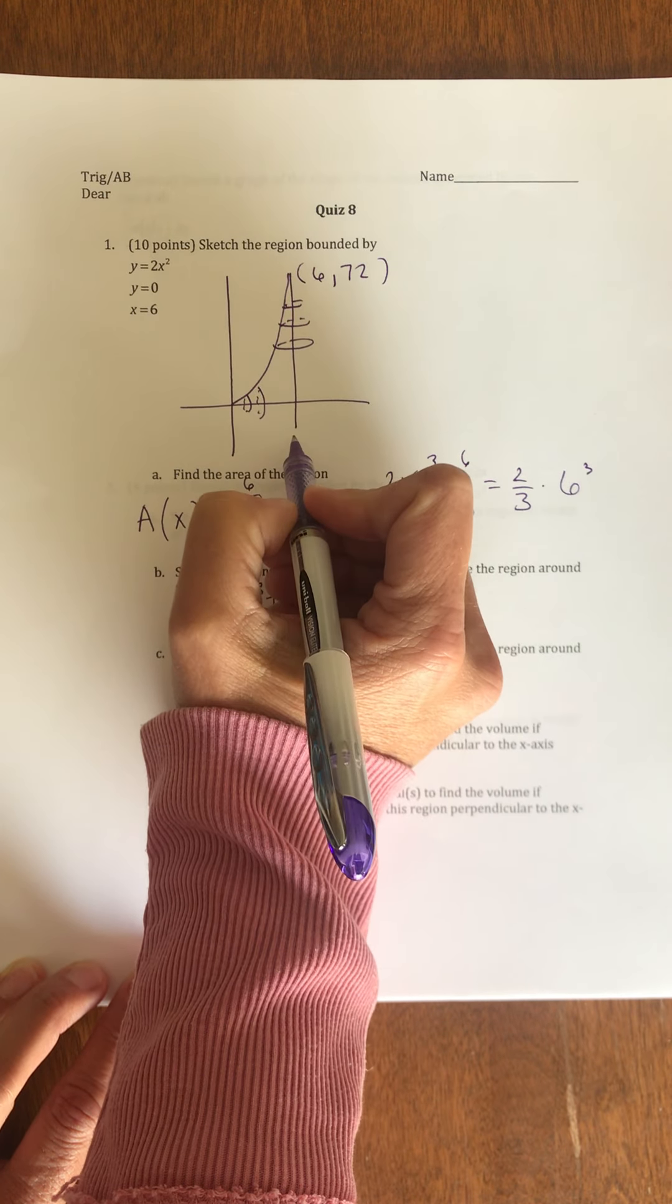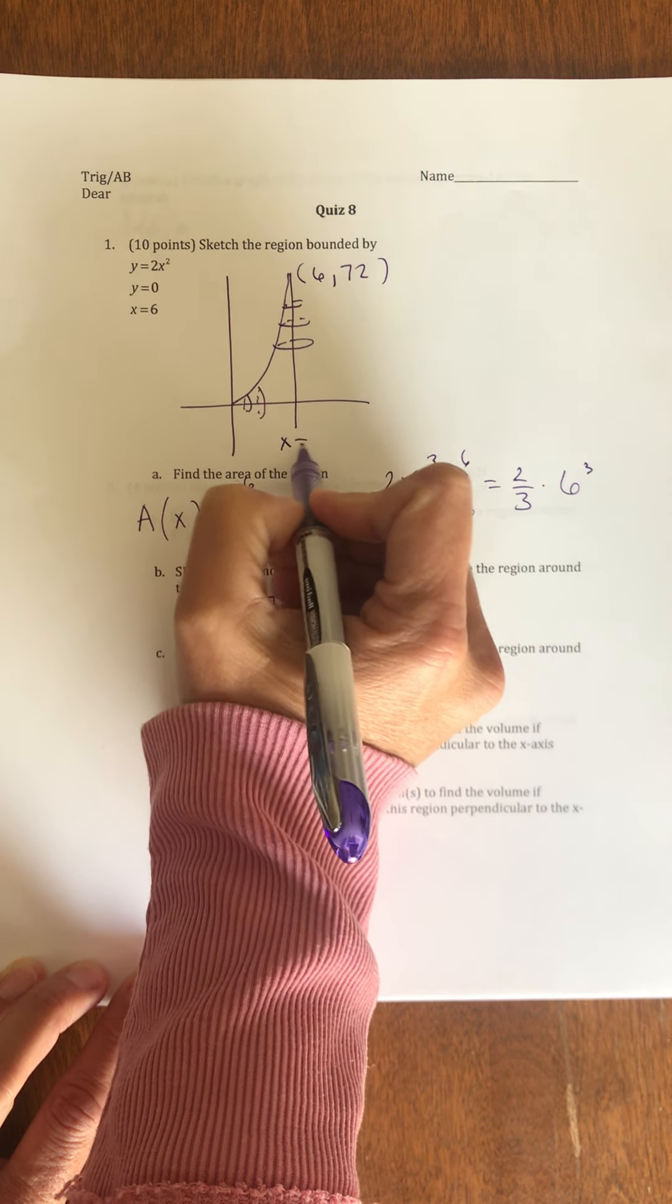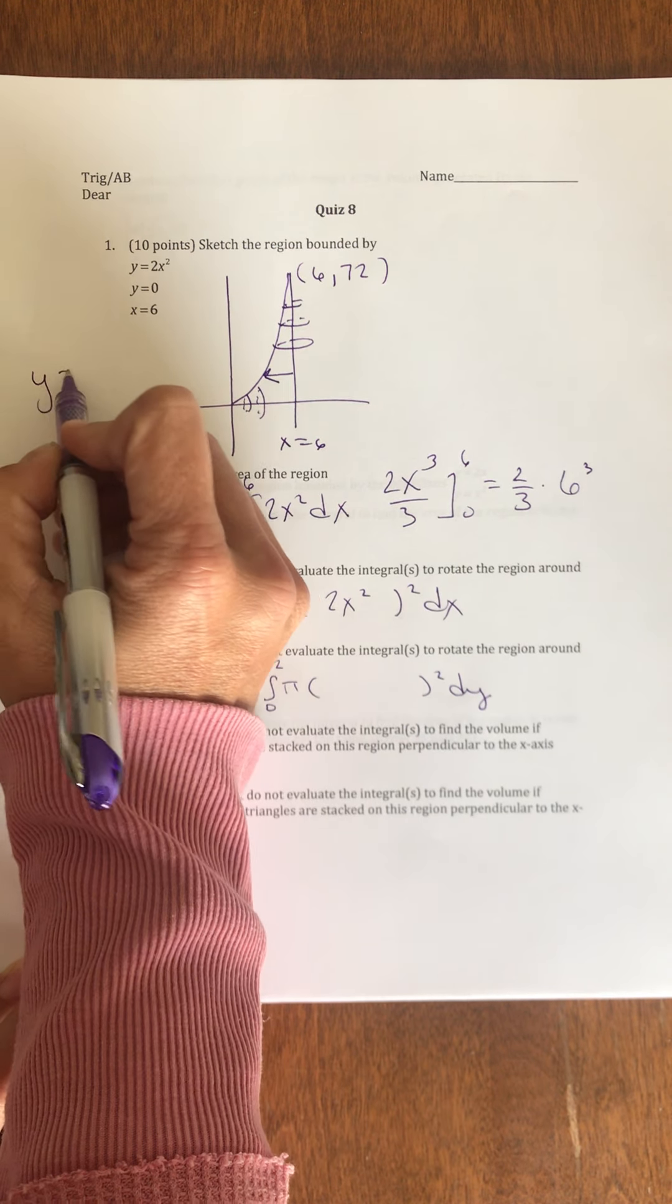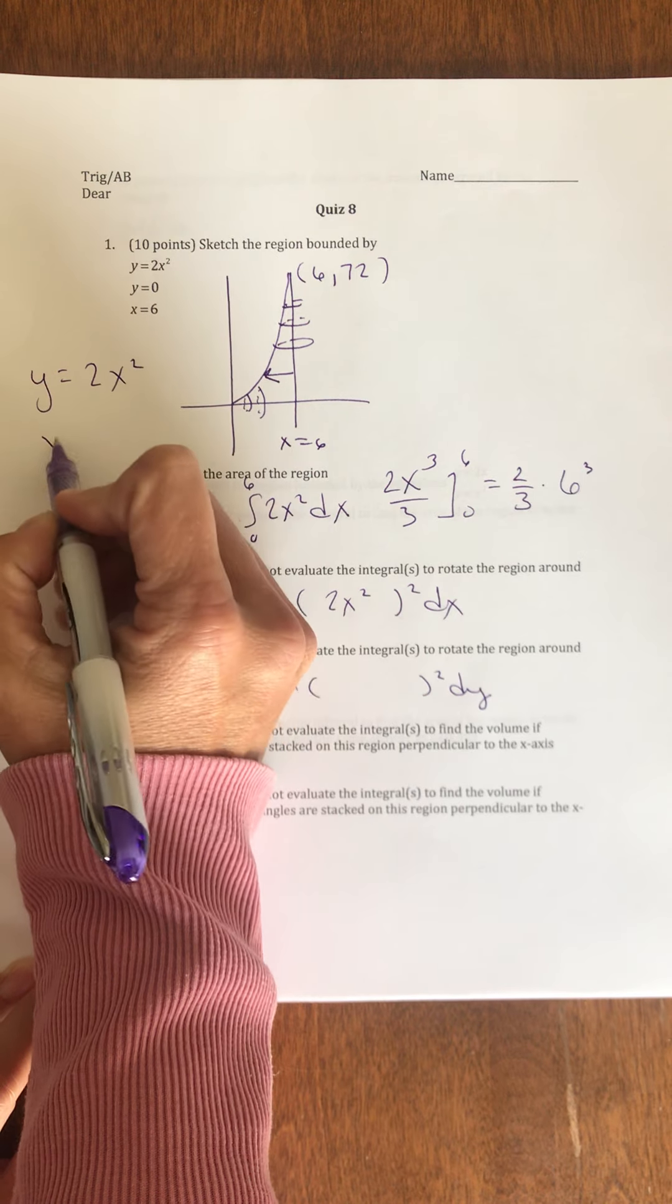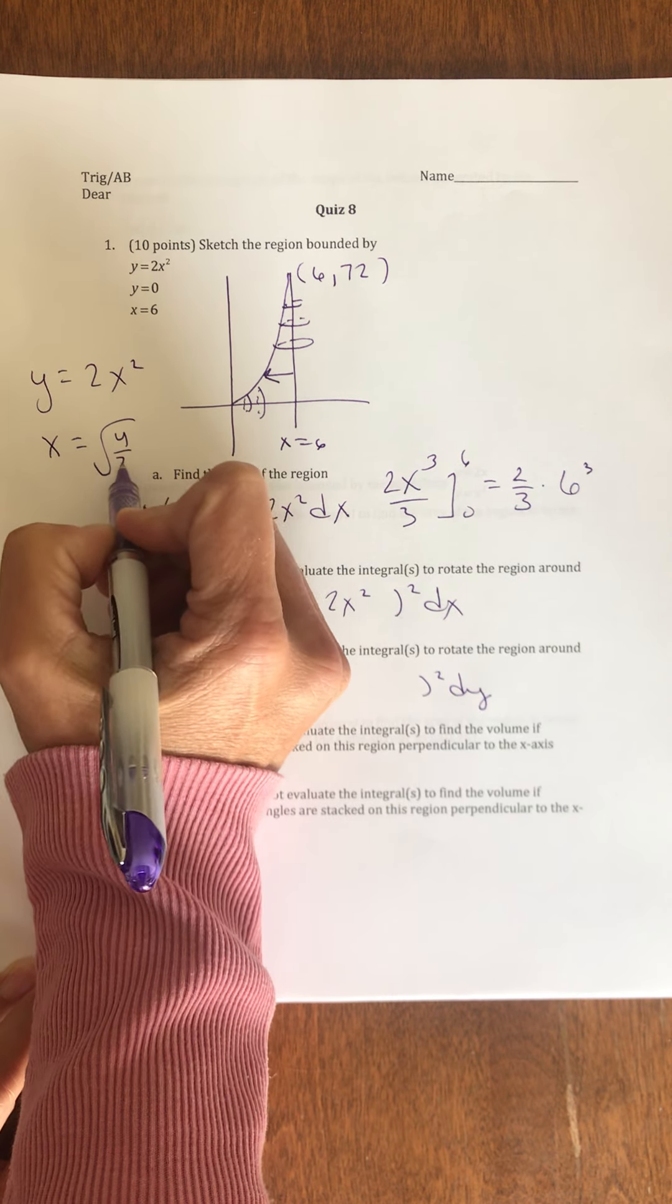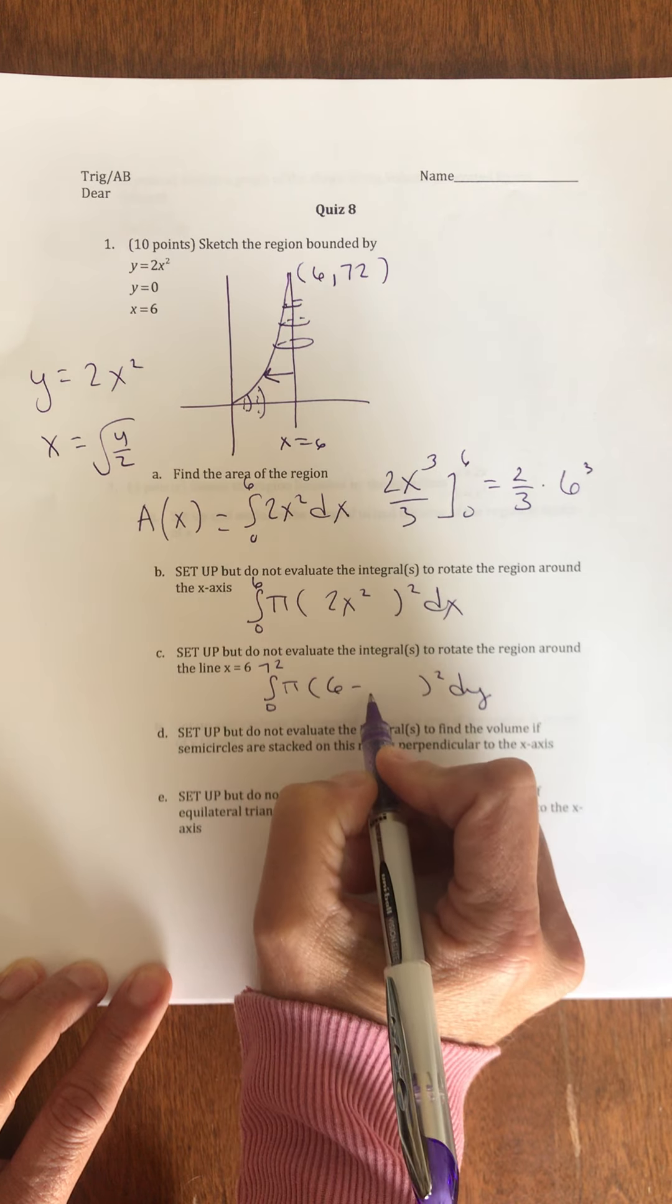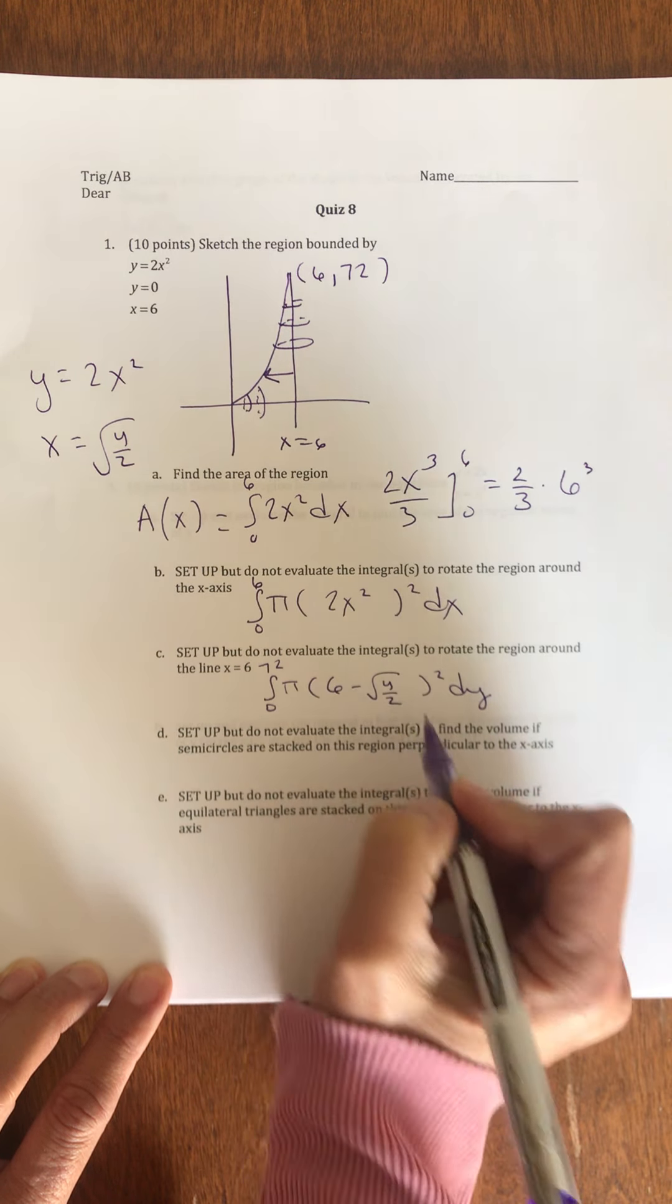Now, my radius, because it revolves around x equals 6, my radius extends from 6 to the curve. If y equals 2x squared, x equals the square root of y over 2. So, my radius is 6 minus the square root of y over 2.